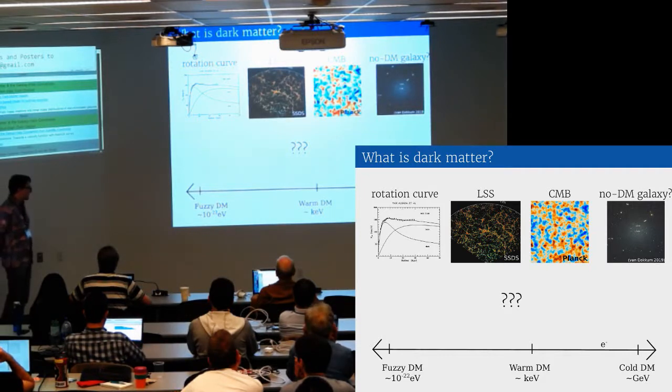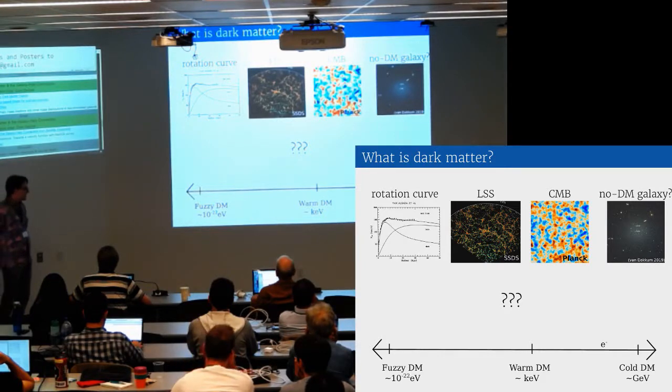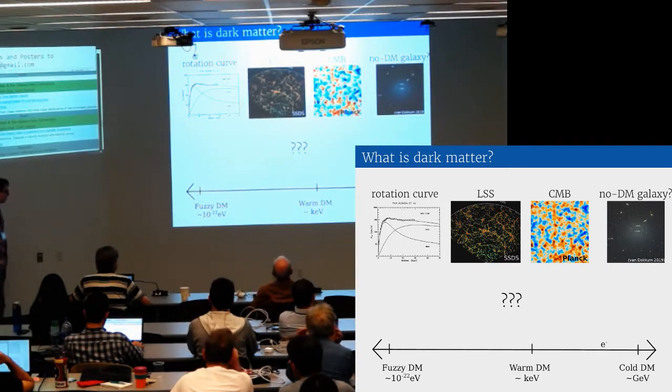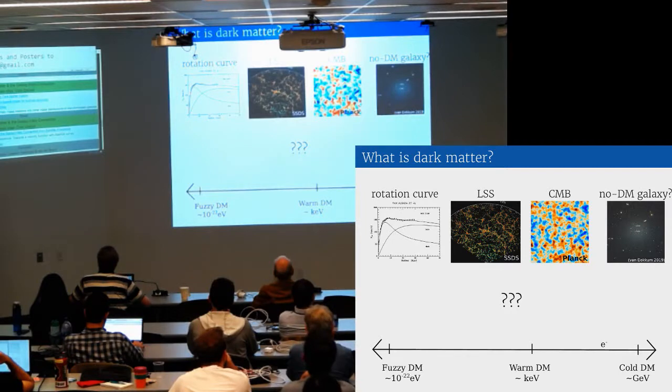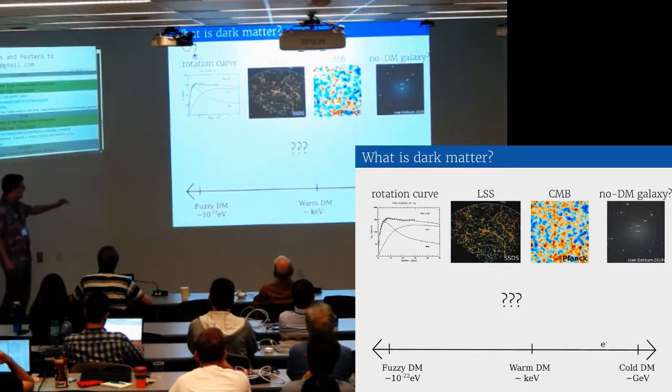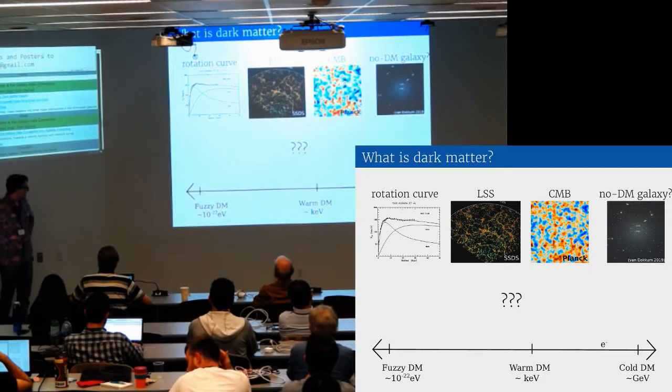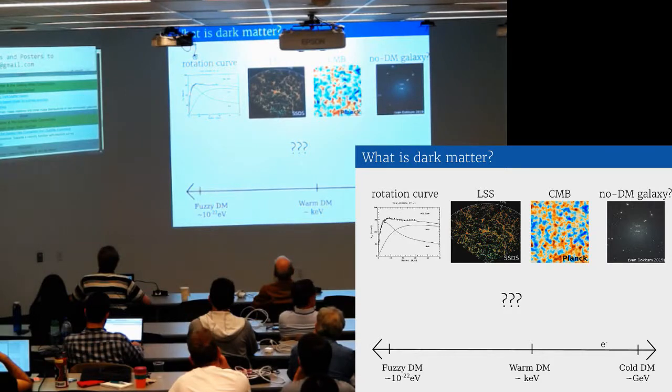We don't know what is the actual particle that makes up this dark matter. It can range from a bunch of things. There's cold dark matter for which no direct evidence yet exists, but the masses around a GeV. There are alternatives such as warm dark matter with keV mass, and what I'm going to be talking about today, fuzzy dark matter, which is an ultralight spin zero boson with mass around 10 to the minus 22 eV. Much smaller than the electron, which is highlighted on this dark matter ruler.